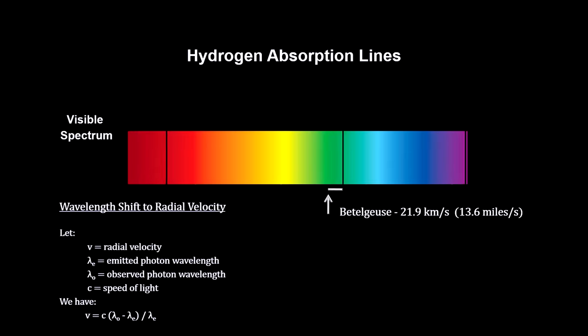The key to measuring the Doppler effect is to measure the change in position of the spectral lines. The further the shift, the faster the radial velocity.